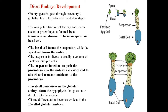In embryogenesis we will first study about the dicot embryo development. Pay attention at these diagrams. This is a diploid zygote formed by the fusion of the egg cell and one male gamete. The lower part of the zygote will always remain the micropylar end, whereas the upper part will always remain the chalazal end. The division that takes place in the zygote is mitotic division only. This zygote undergoes a transverse division and forms two cells — the apical cell and the basal cell.